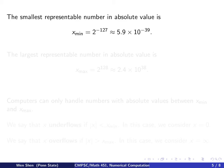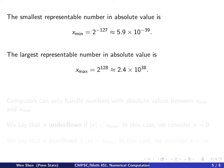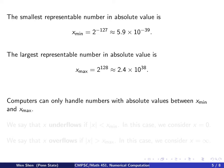The smallest representable number in absolute value occurs when the exponent takes its smallest value, negative 127. Two to the power of negative 127 is approximately 6 times 10 to the negative 39. The largest representable number in absolute value uses the biggest exponent, 128, giving about 2.4 times 10 to the power 38. A computer can only handle numbers in absolute value between this minimum x_min and maximum x_max.